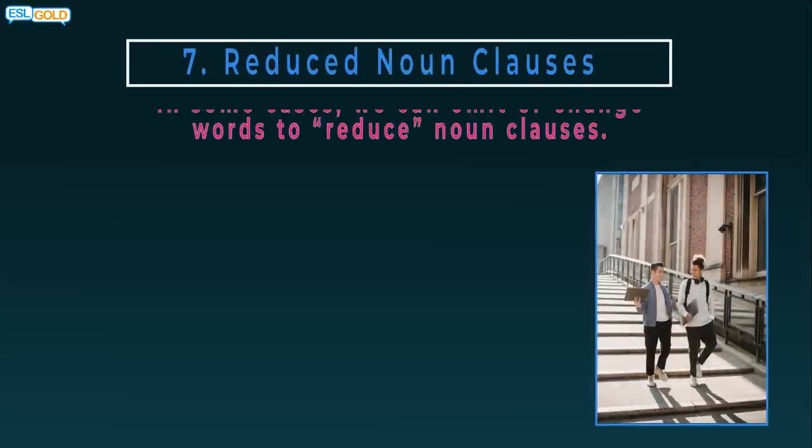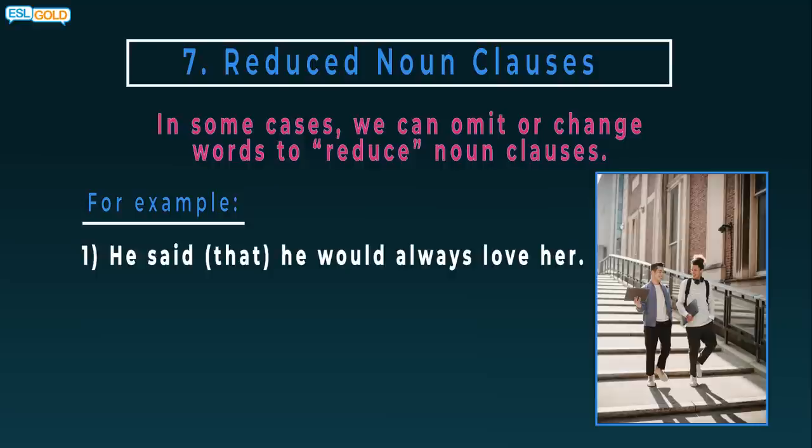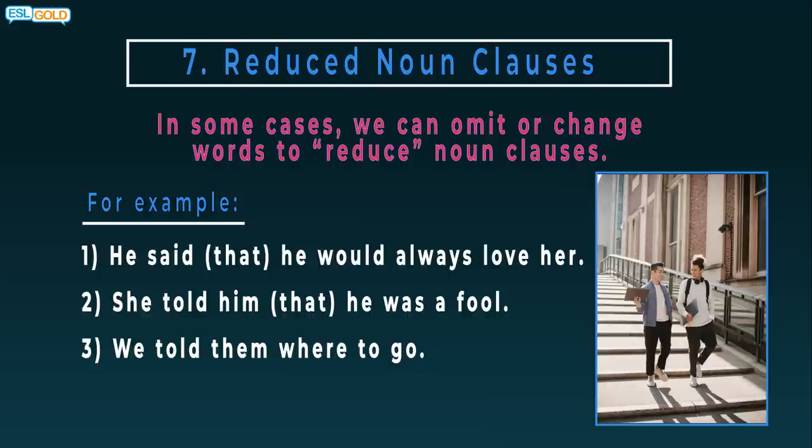7. Reduced noun clauses. In some cases, we can omit or change words to reduce noun clauses. For example: He said that he would always love her. He said he would always love her. She told him that he was a fool. She told him he was a fool. We told them where to go. They talked about what to do.